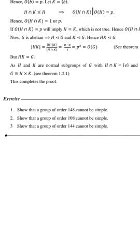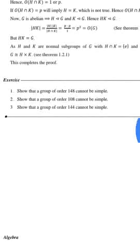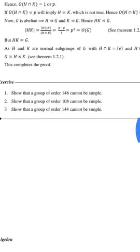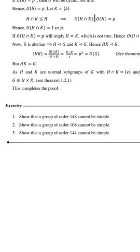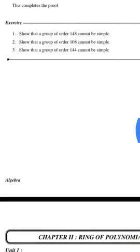Since G is Abelian, H is a normal subgroup of G and K is a normal subgroup of G, and HK is a normal subgroup of G. Therefore the cardinality of HK equals the cardinality of H times the cardinality of K divided by the cardinality of H intersection K, which equals P times P divided by 1, equals P², equals the order of G. Hence HK equals G. Since H and K are normal subgroups of G and H intersection K equals {E}, we get G is isomorphic to H cross K, which is the required result.